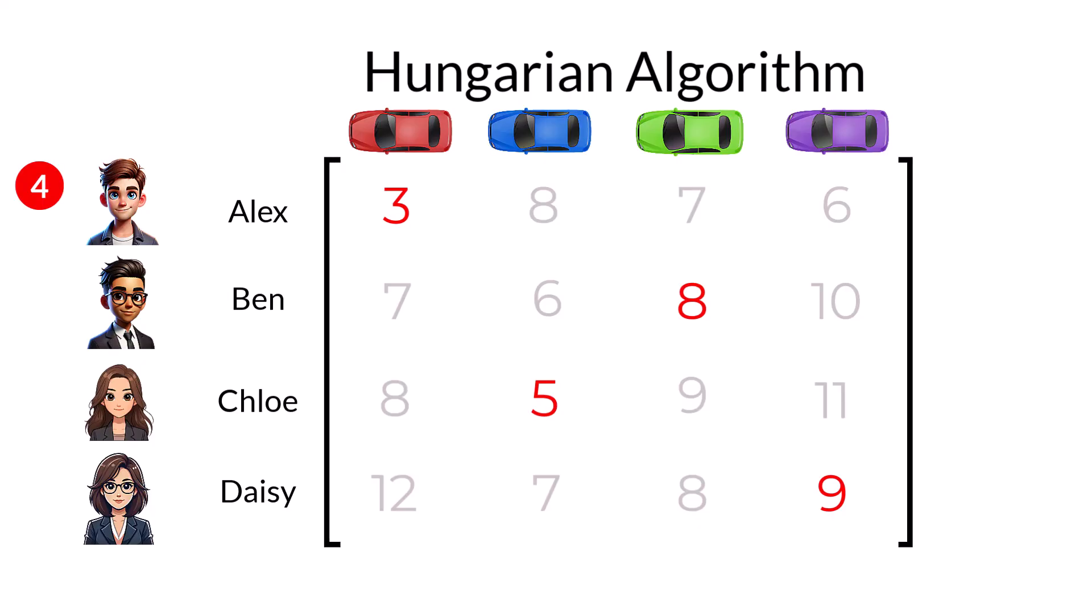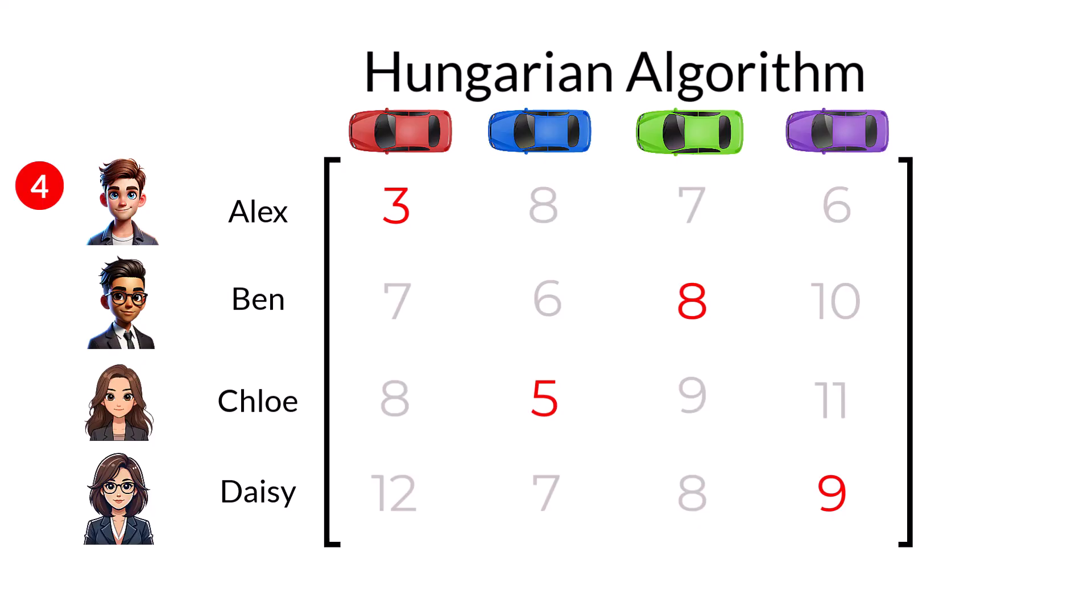From Ben's perspective, he may be left wondering why two vehicles that were initially closer to him were allocated to other riders. Remember, the algorithm is designed to minimize the overall time, not that for the individual.